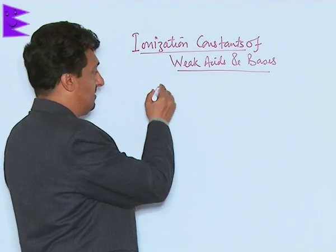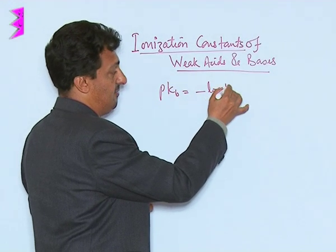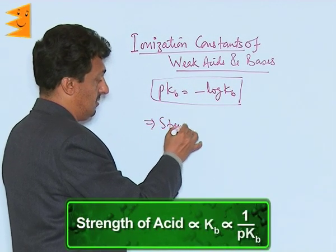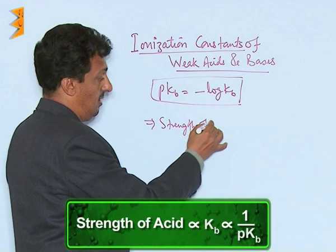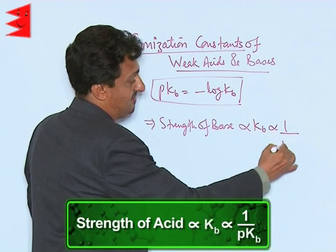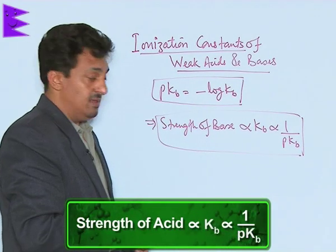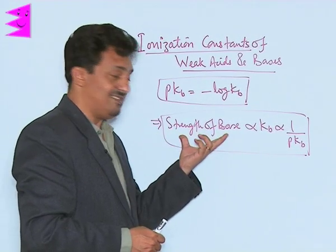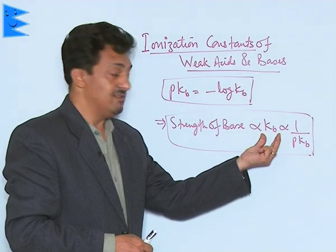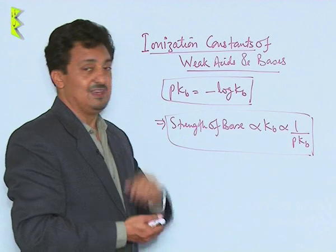The same thing is applicable for bases: pKb equals negative log of Kb. The strength of a base is directly proportional to Kb and inversely proportional to pKb. That means the stronger the base, the larger the dissociation constant Kb, and the smaller the pKb value, because it is a negative term.